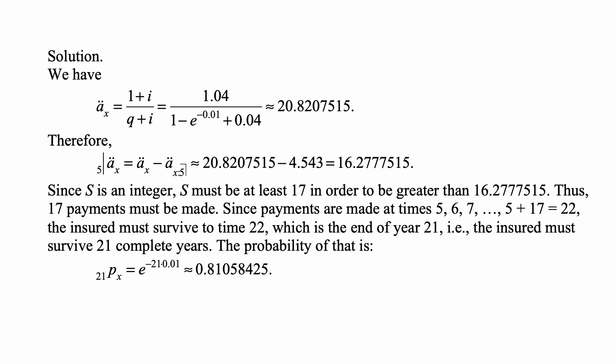The insured does not have to survive the 22nd year, just be alive at the beginning of it, by surviving 21 years. The probability of that, survival of 21 years, is 21px, which is e to the minus 21 times 0.01, because we have constant force of mortality of 0.01, and that's approximately 0.81058425.